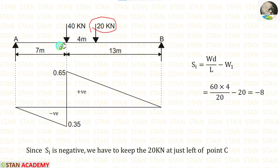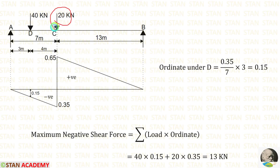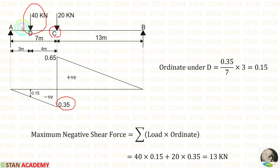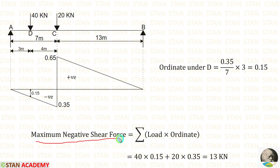With 20 kN just left of point C, the ordinate at C is 0.35. The ordinate under the 40 kN load: for 7 m the ordinate is 0.35, but we need it for 3 m, giving (0.35/7) × 3 = 0.15. The maximum negative shear force = 40 × 0.15 + 20 × 0.35 = 13 kN.